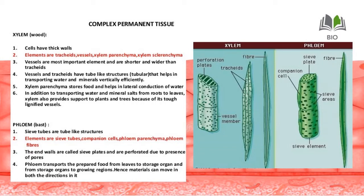Xylem is also called wood and phloem is called bast. Phloem is made up of sieve tubes, companion cells, phloem parenchyma, and phloem fibers. Sieve tubes are tube-like structures; their end walls are called sieve plates, which are perforated due to the presence of pores — like a sieve used in daily life. Phloem transports the prepared food from leaves to storage organs and from storage organs to growing regions.